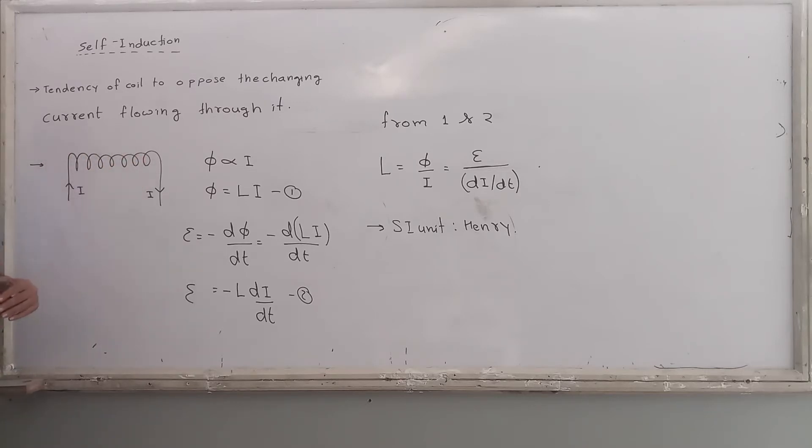When the current through this solenoid will increase, the magnetic field of solenoid will also increase. Current increases, magnetic field also increases. And so, magnetic flux also increases. And does this circuit like that? No. It does not like that, the flux increases.